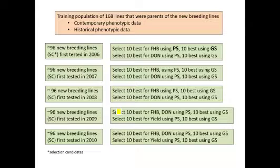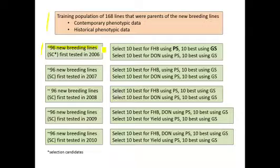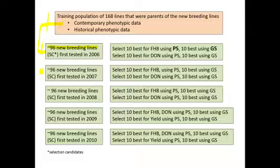Here's how this study is set up and why it's different from the previous one. Using the same training population, we have five prediction sets. In this case, 96 new breeding lines were phenotyped and genotyped. The training population data was used to predict the value of each of these 96 lines, so for each you have both their phenotype and their predicted values. Based on the phenotypes, they selected the 10 best lines for fusarium head blight resistance using phenotypic selection, and also selected the 10 best based on estimated breeding values from genomic selection.